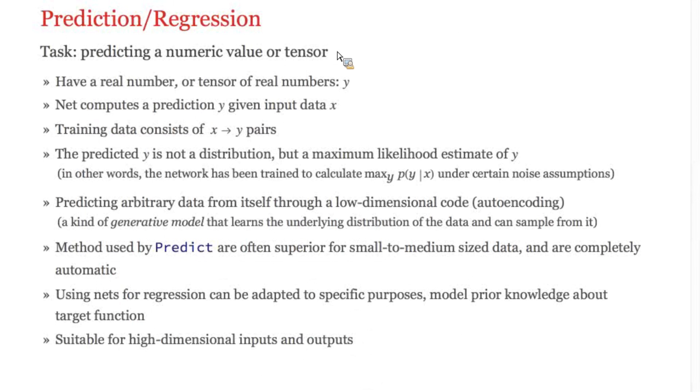One kind of supervised learning is known as regression. In this task, the net's job is to predict the numeric value or tensor values from the input. For small datasets, it's often better to use the existing predict function. However, neural networks can be useful in some niche applications where you have some prior knowledge of the functions that will best approximate your data, or if you were to use more exotic techniques like auto-encoders.